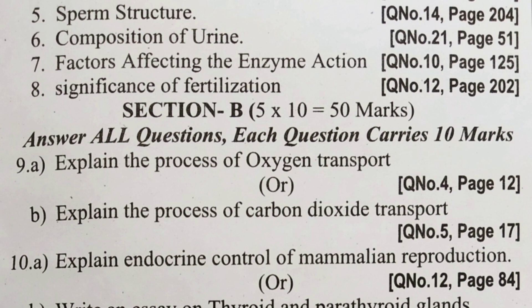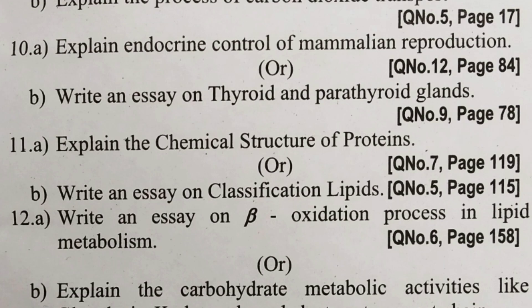Section B, Question 9A — explain the process of oxygen transport. Question 9B — explain the process of carbon dioxide transport. Question 11A — explain endocrine control of mammalian reproduction. Question 10B — write an essay on thyroid and parathyroid glands. Question 11A — explain the chemical structure of proteins. Question 11B — write an essay on classification of lipids.